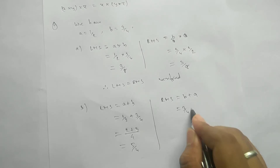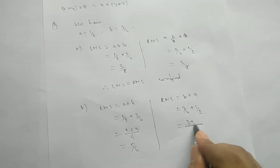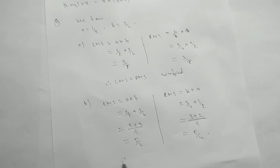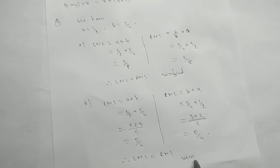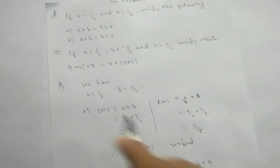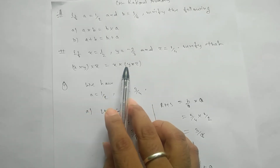For RHS, that is b plus a: we write three by four plus one by two. Taking the LCM of four, we get three plus two, which again gives us five by four. Therefore LHS equals RHS — verified.